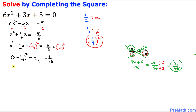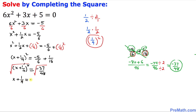So we have (x + 1/4)² equals negative 37/48. Our next step is to remove this square, so we take the square root on both sides. The square and square root undo each other, giving us x + 1/4 equals plus or minus the square root of negative 37 in the numerator over the square root of 48 in the denominator.